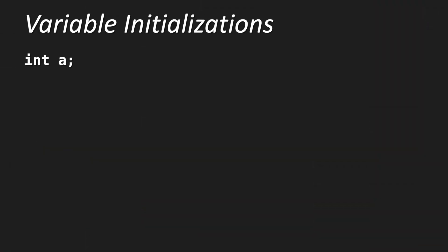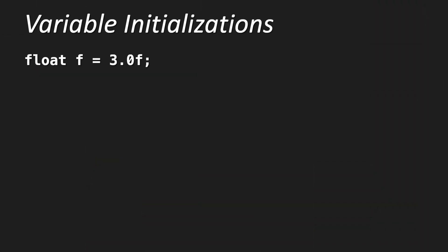Here are some examples of initialization. For instance, you have int a, and you can write a equals 3, a equals 5, a equals 10, a equals 7, each with a semicolon. Notice it is just a simple numeric value without commas. If we want to initialize a float value, we write, for instance, float f equals 3.0f, or float f equals 3.14f semicolon, and so on.